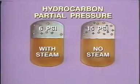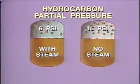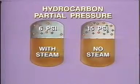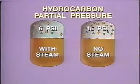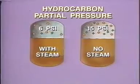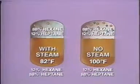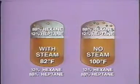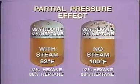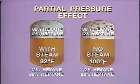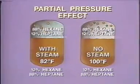When steam is added to the system, the hydrocarbons react as if they were under 6 pounds of pressure instead of 15. With less pressure acting against the liquid hydrocarbon mixture, hexane and heptane will distill at a lower temperature. This is known as the partial pressure effect, and it is used extensively in refining distillation processes to reduce the high costs of energy consumption.